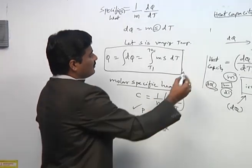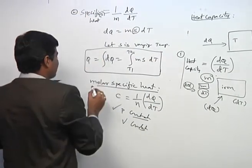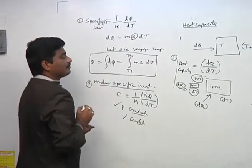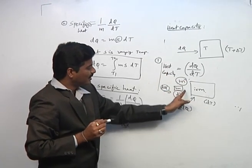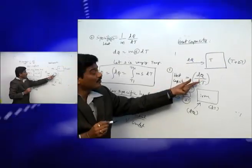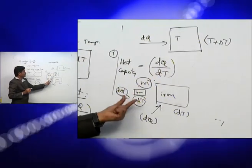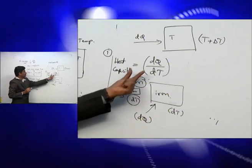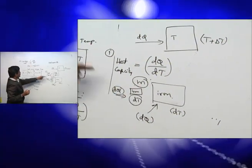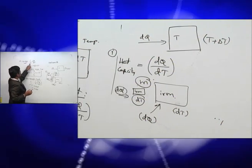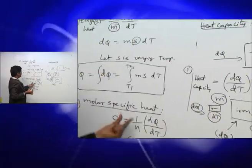To summarize: first is heat capacity — the amount of heat required to raise a material's temperature by DT. Since DQ varies with mass, we standardize by introducing mass as a factor, giving specific heat. For gases, we use the number of moles instead, giving molar specific heat.